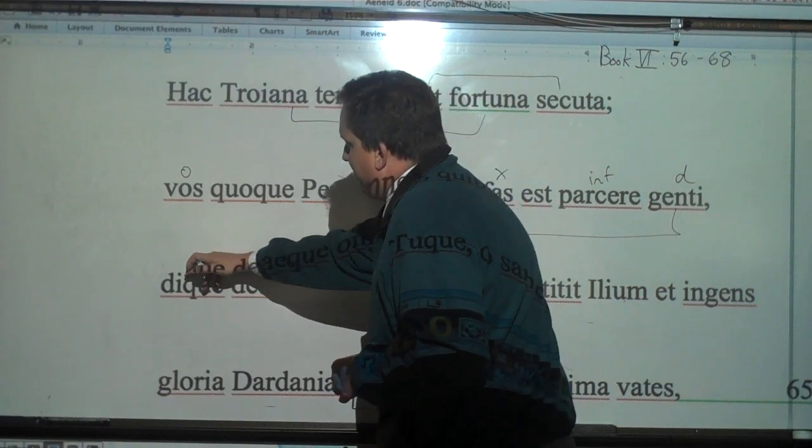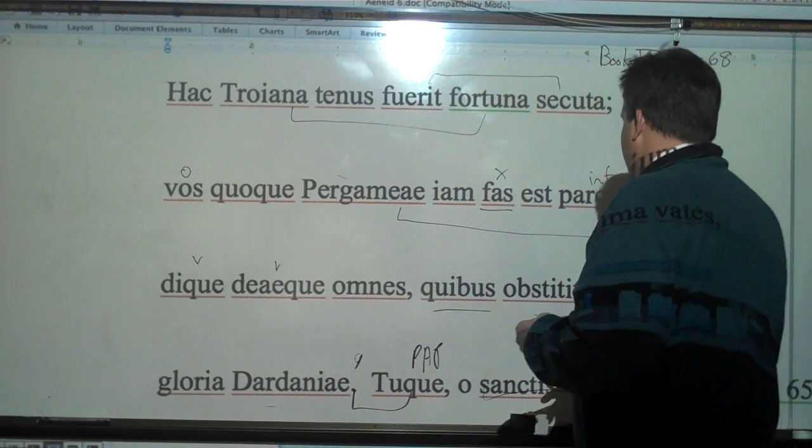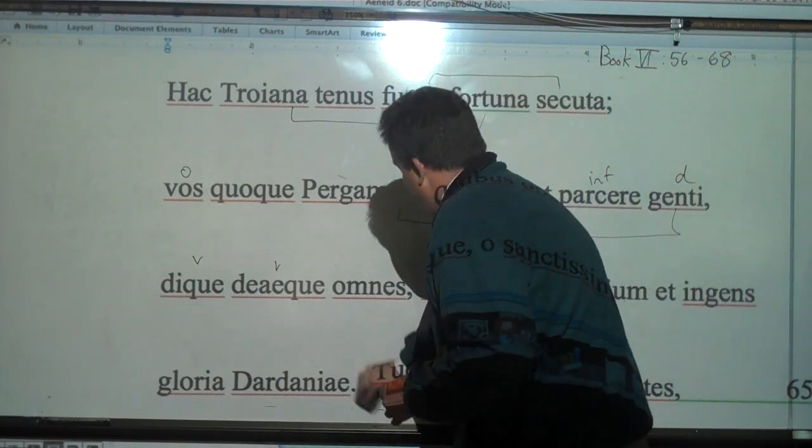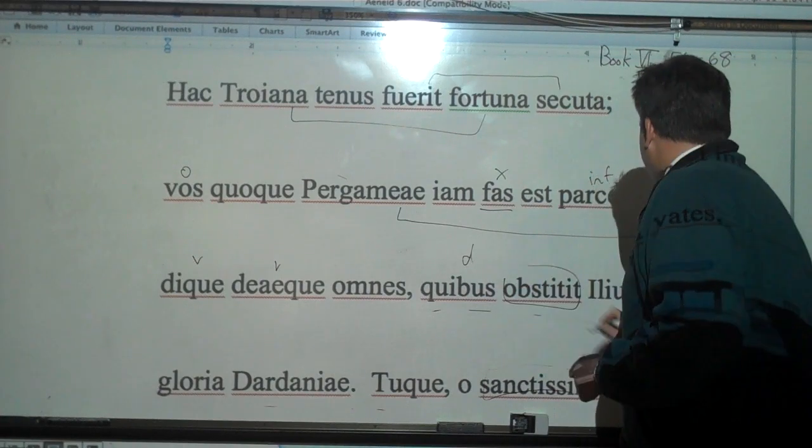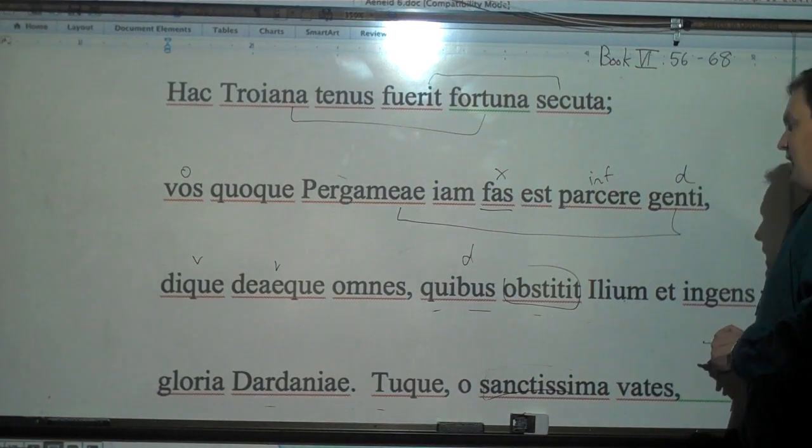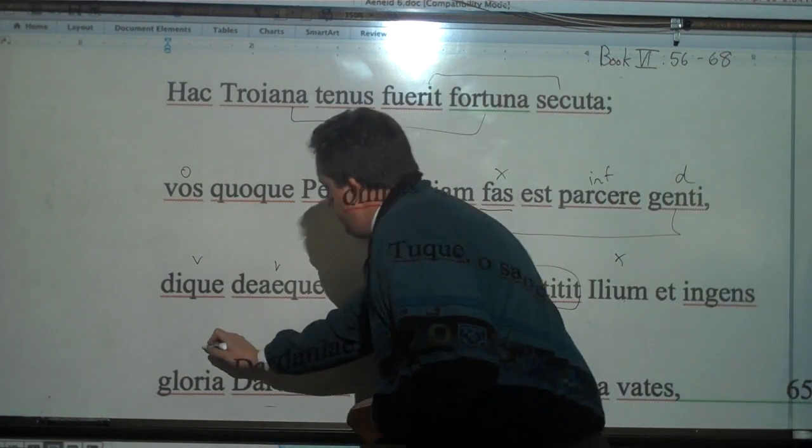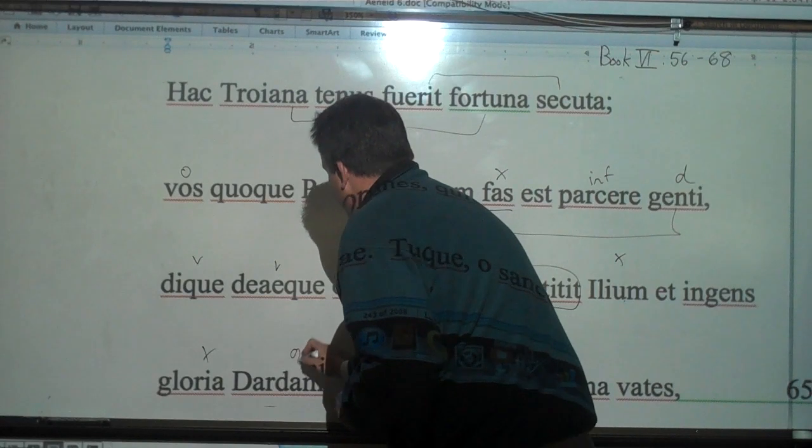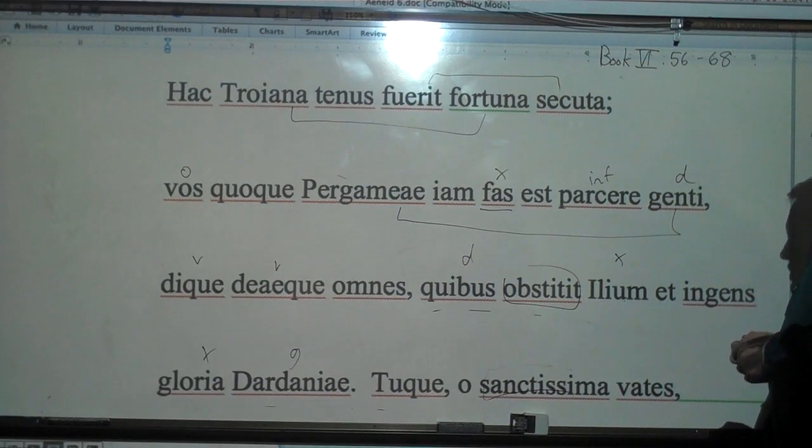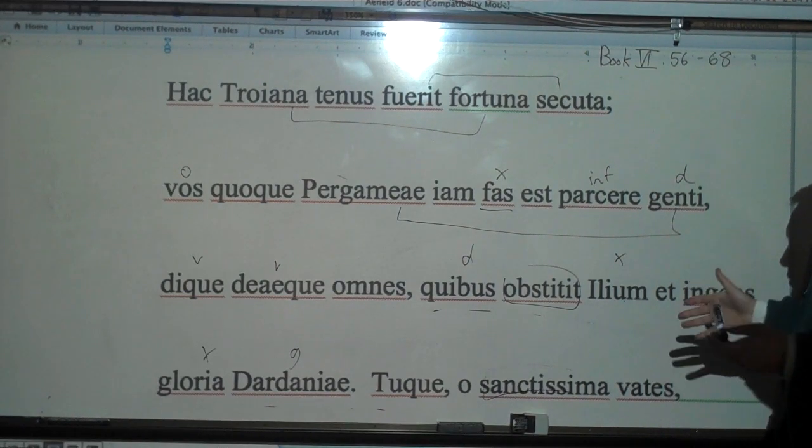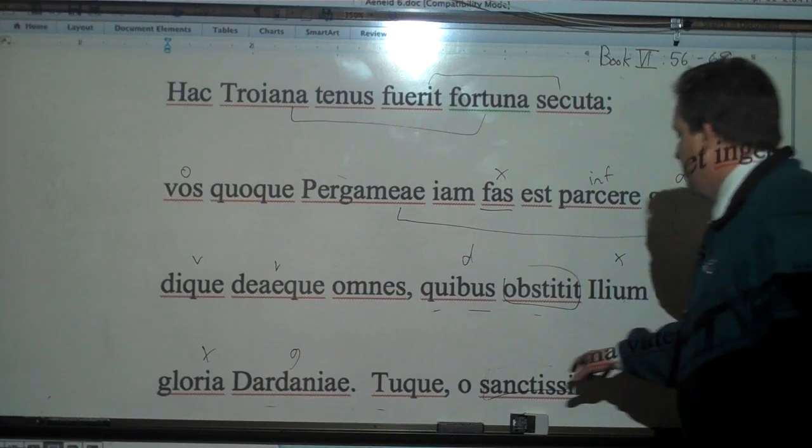And this is in apposition to vos. This comes to be, I think it's like a vocative, really. Quibus obstitit, to whom, quibus dative, obstitit Ilium et magna gloria Dardaniae, of Troy. Ilium and the great glory of Dardania opposed. So it's now right for you to spare even the people, even the gods and goddesses who were opposed to them in the past. And you,